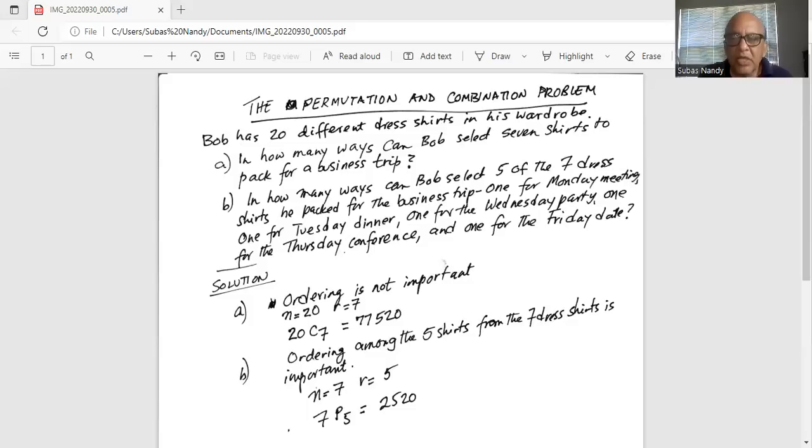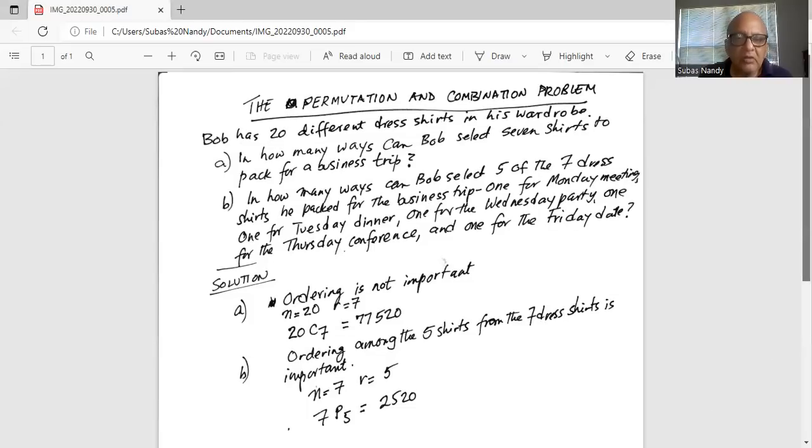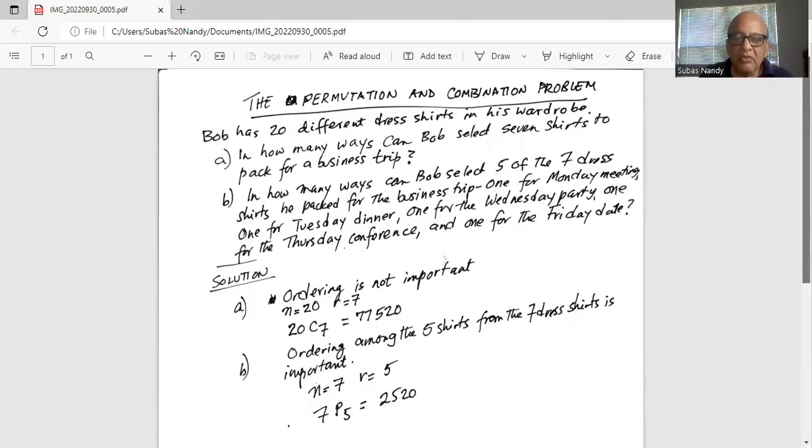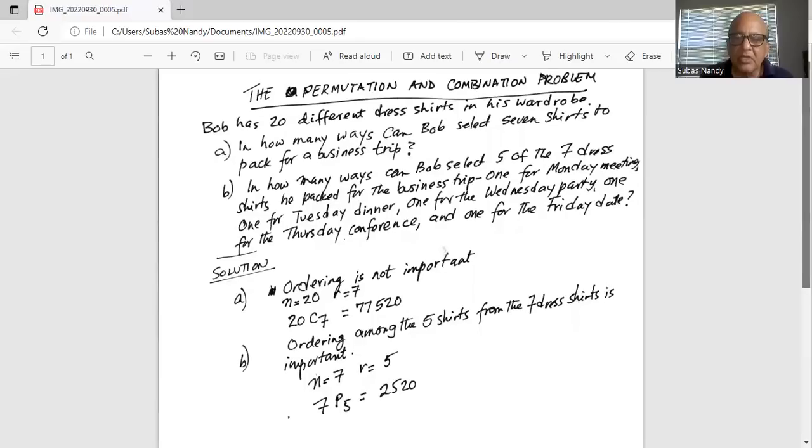Now in part B ordering is important. We are going to order among the five shirts from the seven dress shirts. Ordering is important. So in this case, we are going to use permutation. When ordering is important, we use permutation. When ordering is not important, we use combination. So in this case, from seven shirts, we are going to select five and ordering is important.